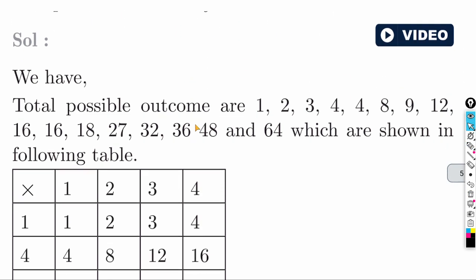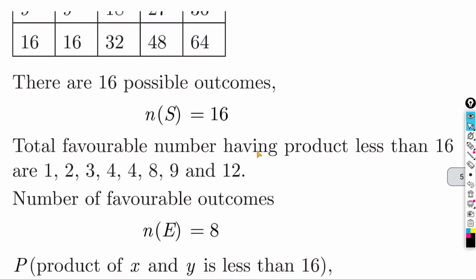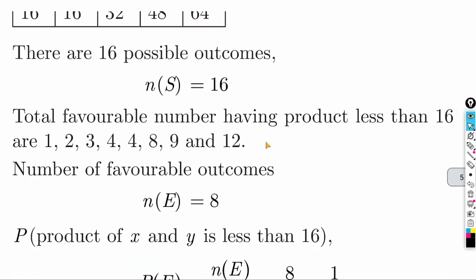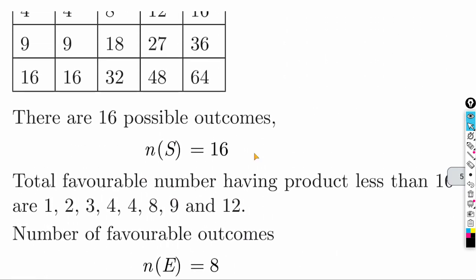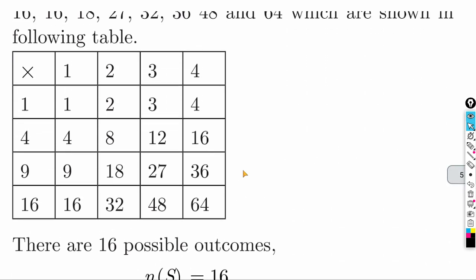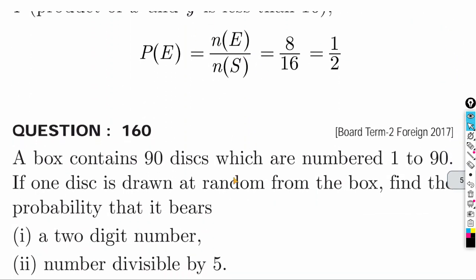Taking all values into account, total outcomes = 16. Products less than 16 (excluding 16 itself): counting gives 8 favorable cases. Answer: 8 by 16.